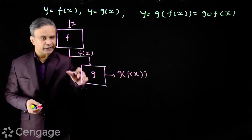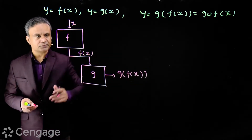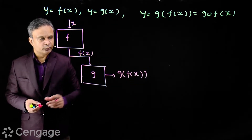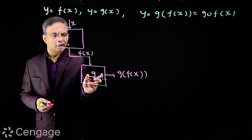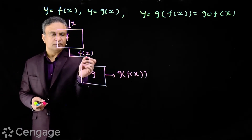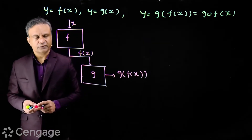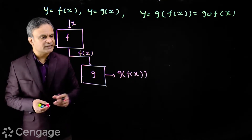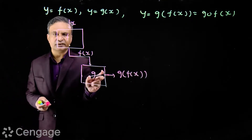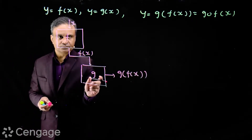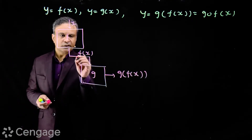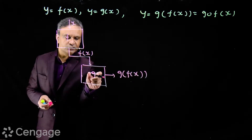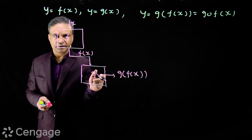Now we can explain it like this: input values to function g(x) are the output values of function f(x). However, not all the output values of f(x) will be acceptable to function g(x).